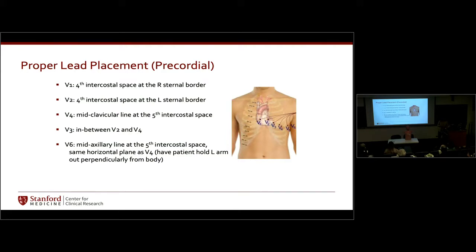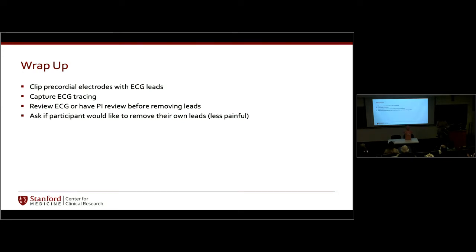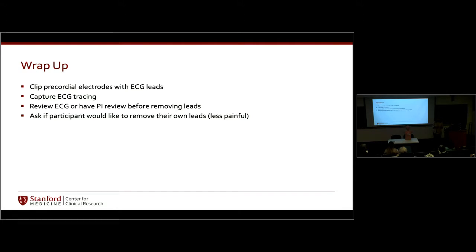Once all electrodes are in place and leads are clipped on, depending on your ECG machine, press capture or start to capture the ECG tracing. When looking at the screen, you want to see a consistent waveform. Artifact is easy to identify — it looks like a whole bunch of squiggly lines. If you see artifact, maybe the participant is talking, leads are in the wrong position, or you've mixed up V5 and V6. Make sure everything is correct, look at your tracing, and if needed ask someone else to come help troubleshoot.